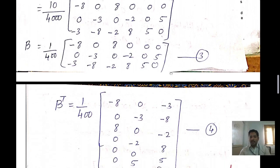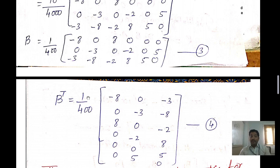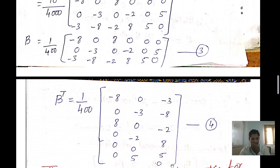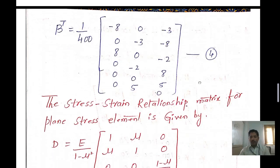We then need B transpose, which is obtained by converting each row of B into a column. So B transpose equals 1 over 400 times the transposed matrix, where each row of B is represented as a column. This is equation 4.